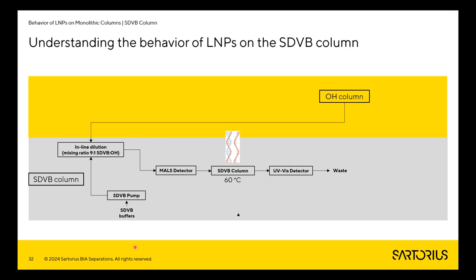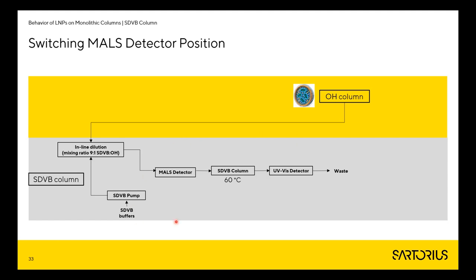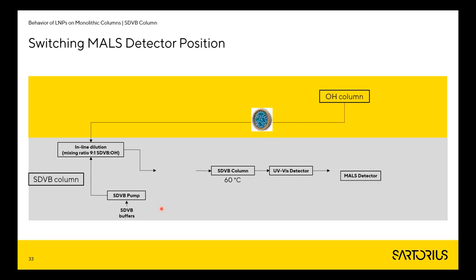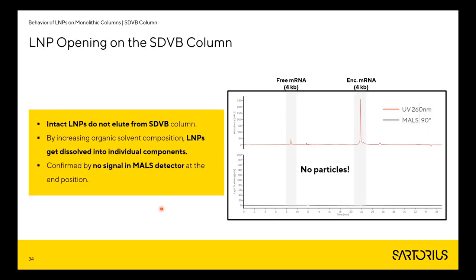These separate components are the mRNA and the four lipids of your LMP composition. We also proved this additionally by switching the multi-angle light scattering detector to after the SDVB column. What you get is LMPs eluting from the OH column visible in MALS, and then opening up the particles from the SDVB column, after which UV is quantified but there is no particle response on the MALS detector. So the SDVB column is a good way to open up your particles without any other intervention, and you can then quantify individual components — the mRNA by UV, and lipids using other detectors.